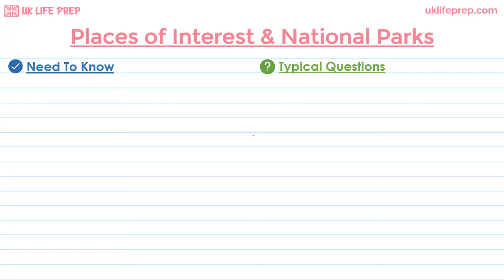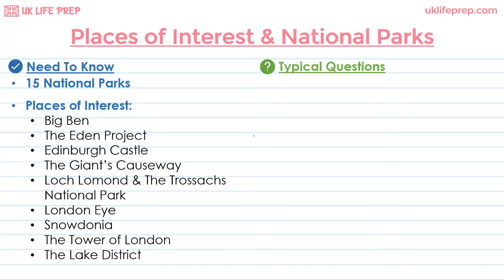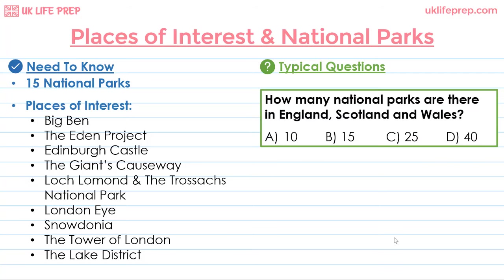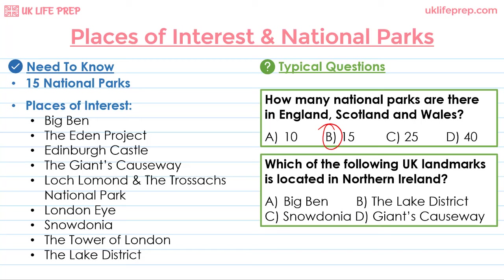Questions on places of interest and national parks are also very common. There are 15 national parks in the UK. I suggest pausing the video to read through the full list of places of interest, being aware of what each is and where it is. There are no national parks in Northern Ireland, so all 15 national parks are in England, Scotland, and Wales. The only landmark you need to know about located in Northern Ireland is Giant's Causeway.